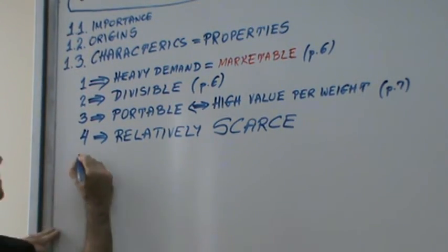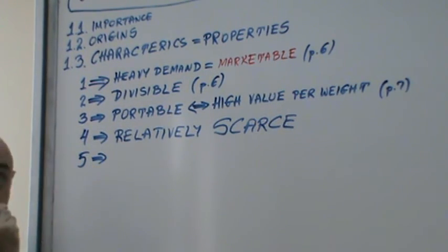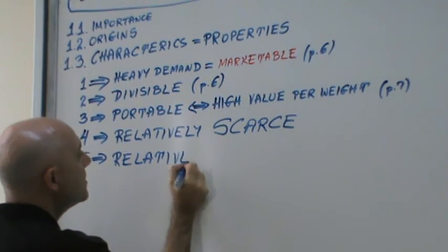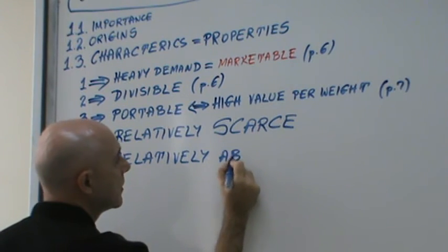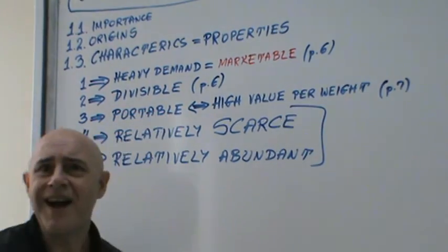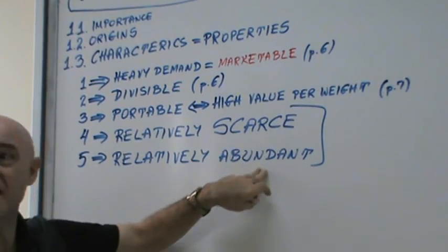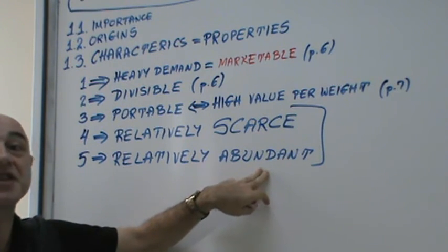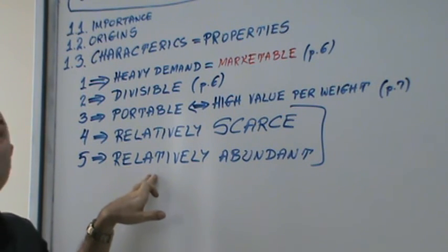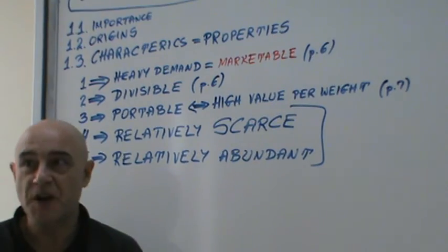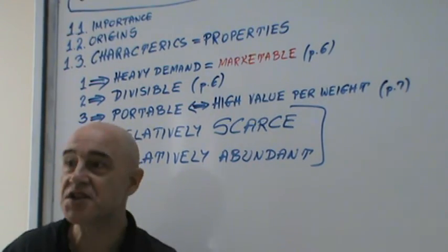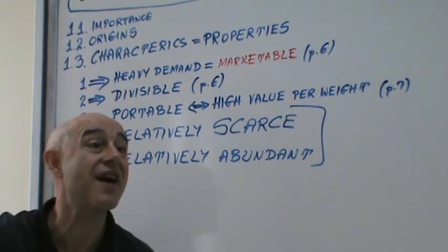Now the next one is very confusing to most students. It has to be relatively abundant. How could it be scarce and abundant at the same time? And the short answer is it should be both of them, relatively scarce and relatively abundant. This means the commodity cannot be extremely scarce. If it's extremely scarce, a lot of poor people will not have any of it at all.